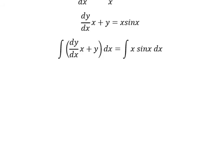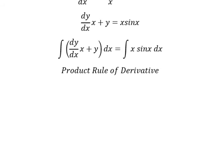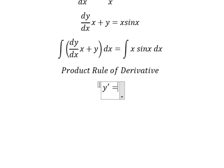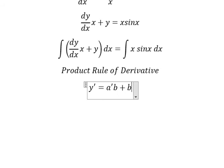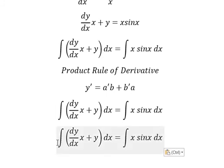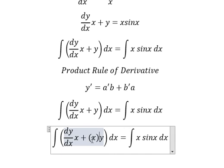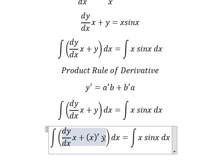Next, we need to use the product rule of derivatives. So we have: the first derivative of (A·B) equals the first derivative of A multiplied by B, plus the first derivative of B multiplied by A.